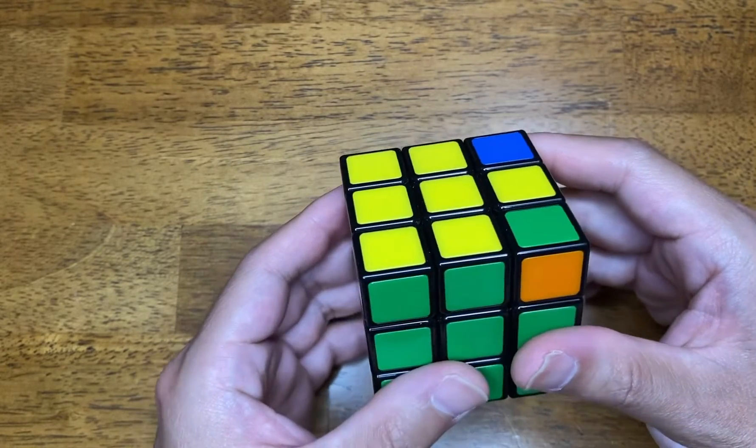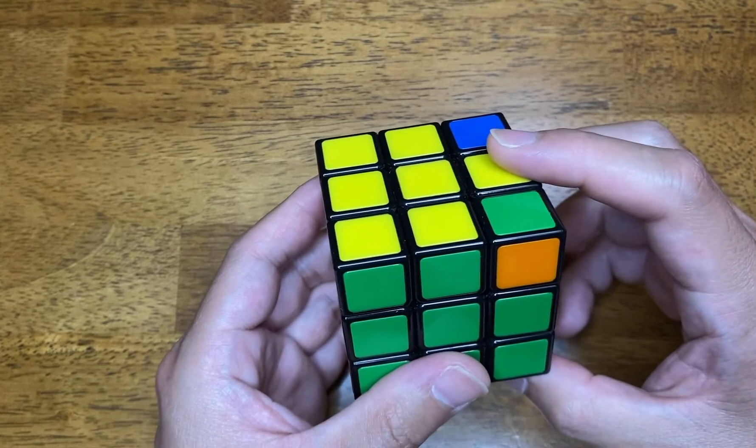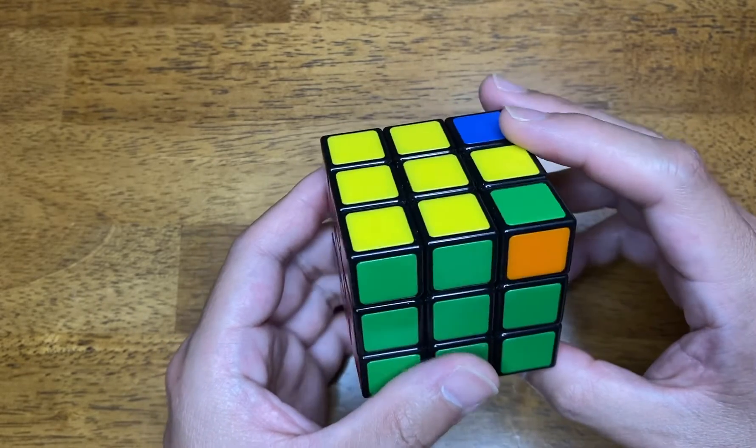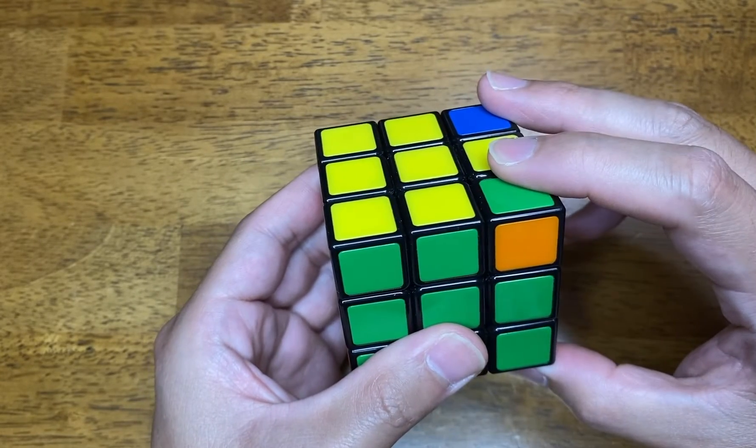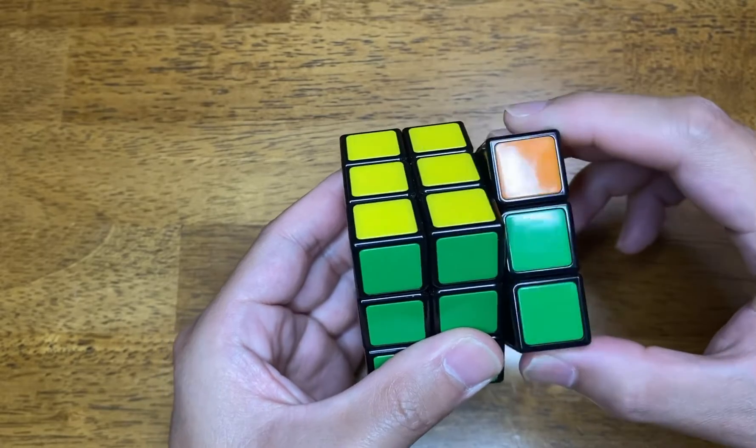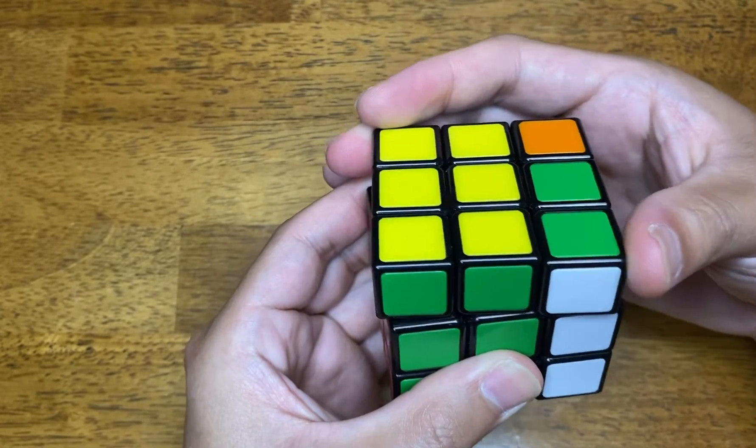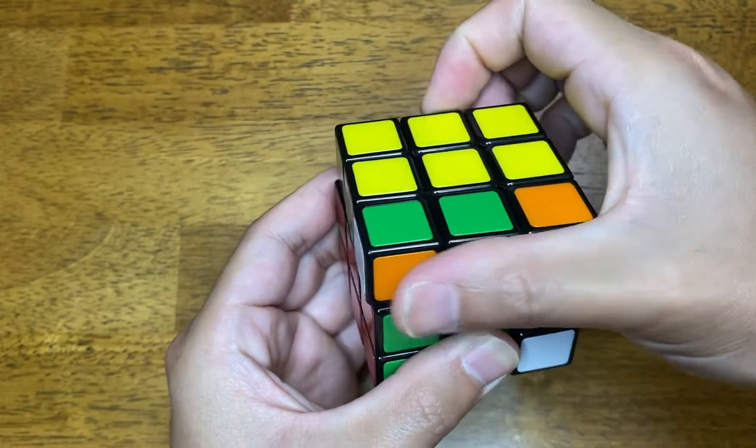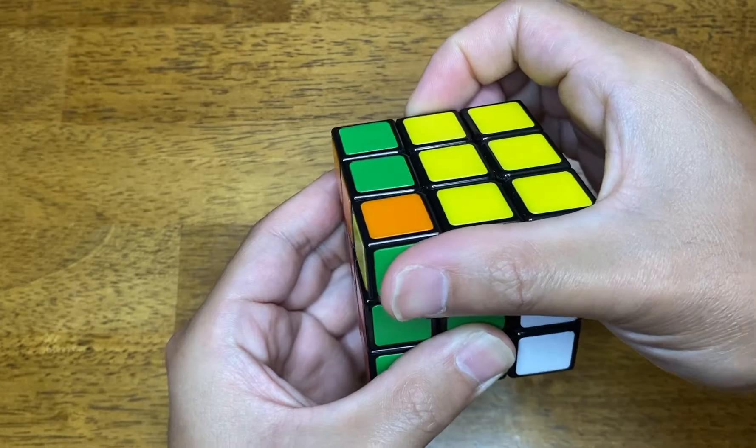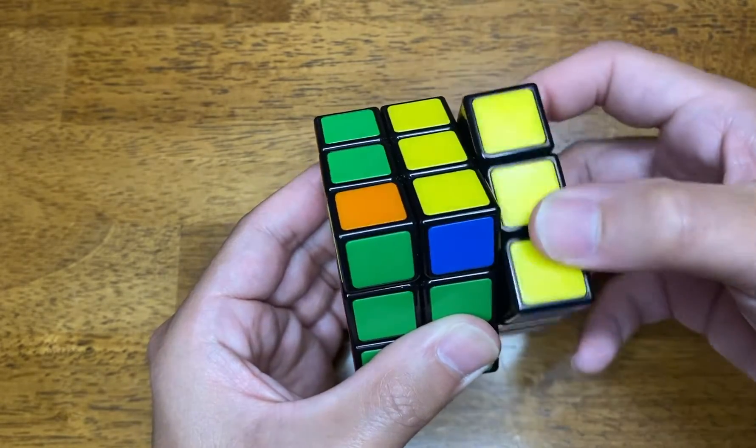And then we can go ahead and do the algorithm, which is called the right 180, left 180. What you would need to do is take the right side, bring it up once, take the top, and turn it clockwise 180 degrees, one, two, bring the right side back down once,